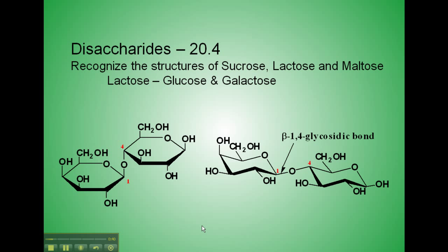This next one, lactose, is made up of glucose and galactose. These two structures look very similar, but there's a subtle difference between the two — look carefully and you can see. On this ring on the left, the OH group is pointing upward. On this ring on the right, the OH group connected to number four is actually pointing downwards.